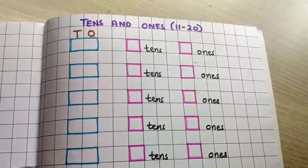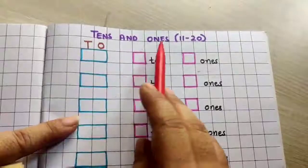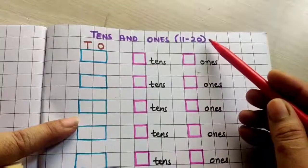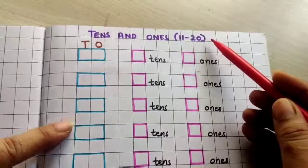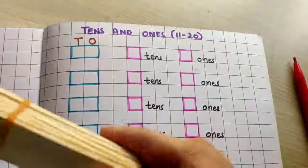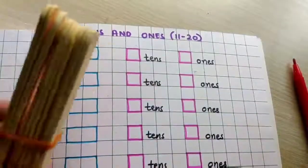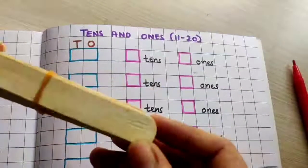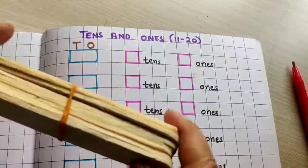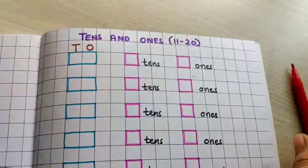Hi children, welcome back. Today we are going to discuss the concept of tens and ones from the number 11 to 20. Yesterday we completed up to 10. What we learned is that a set of 10 sticks, when they are made into a set or a group, it is called a group of 10 or a bundle of 10.